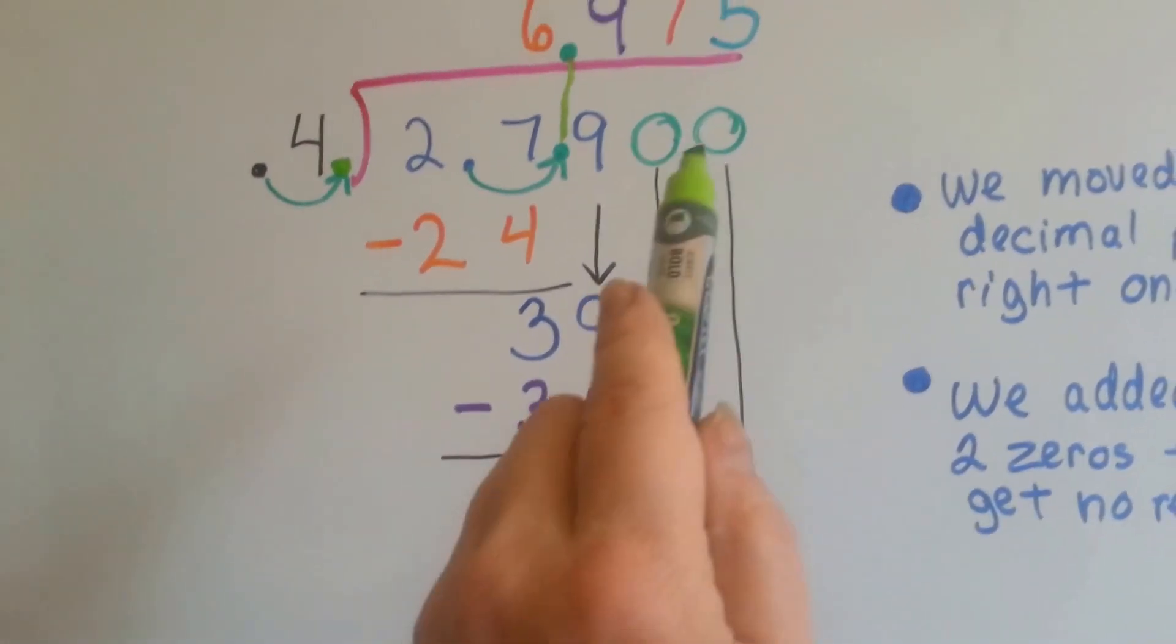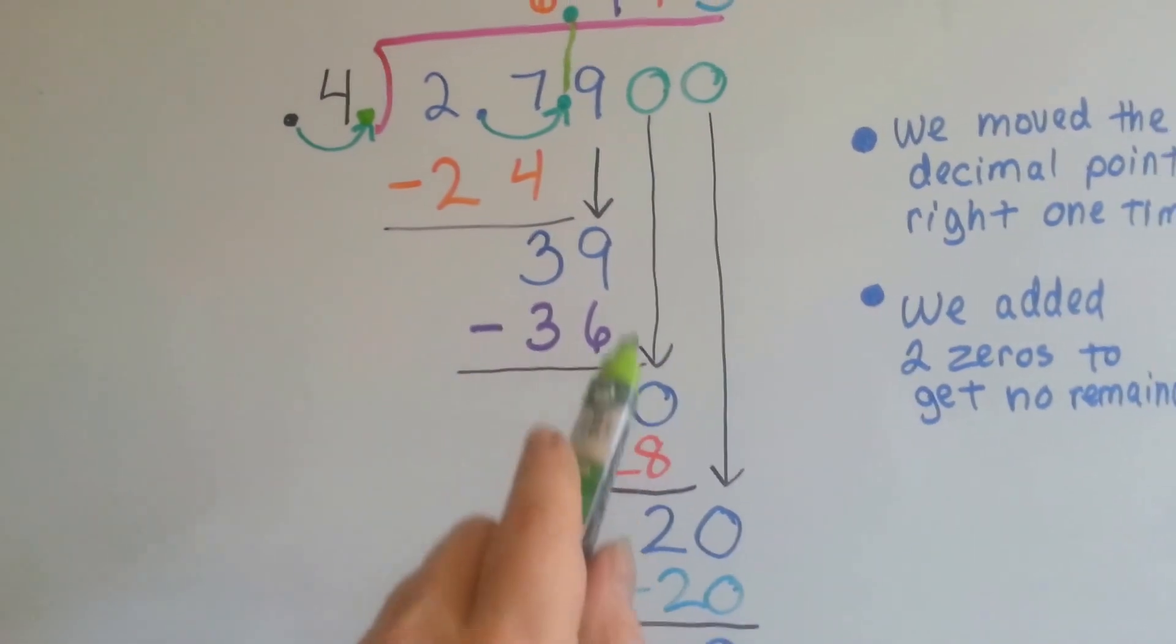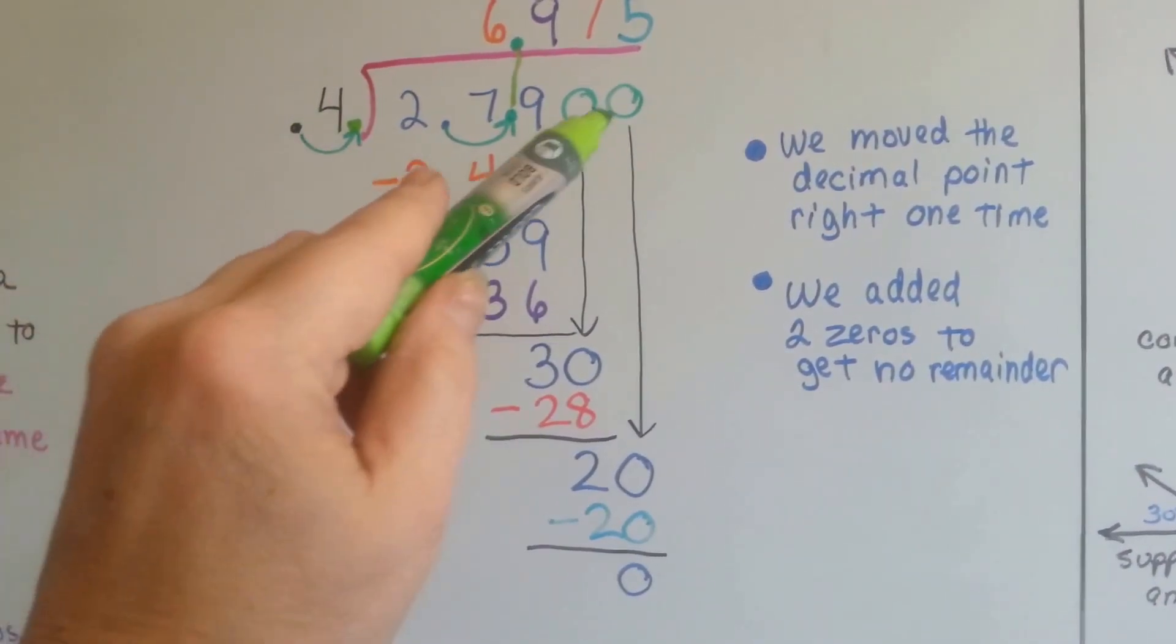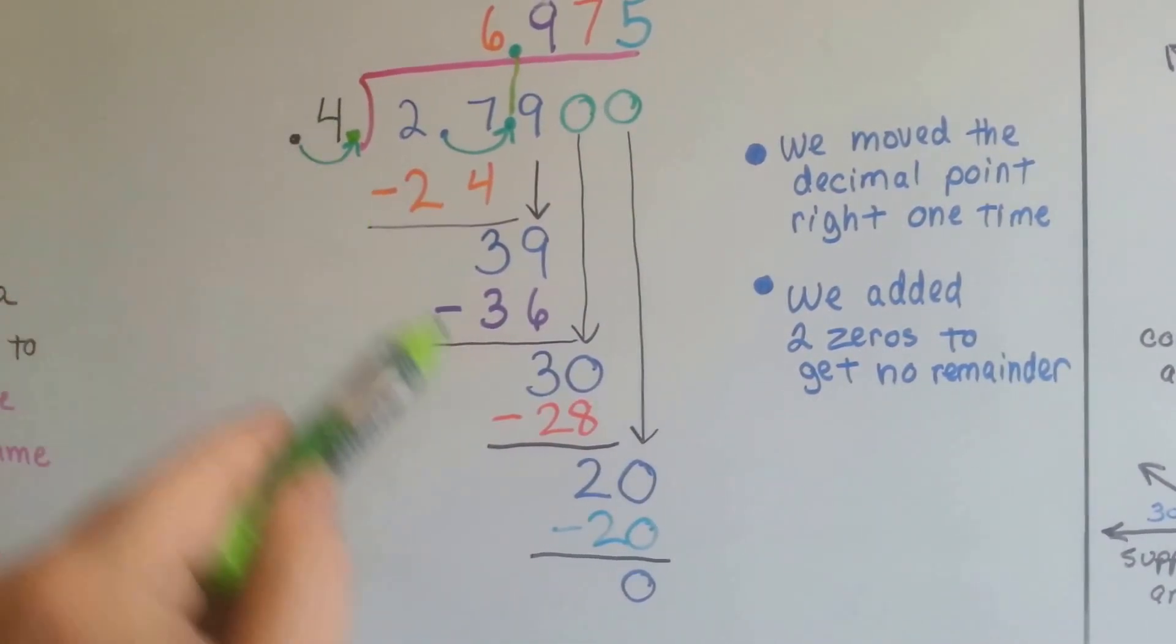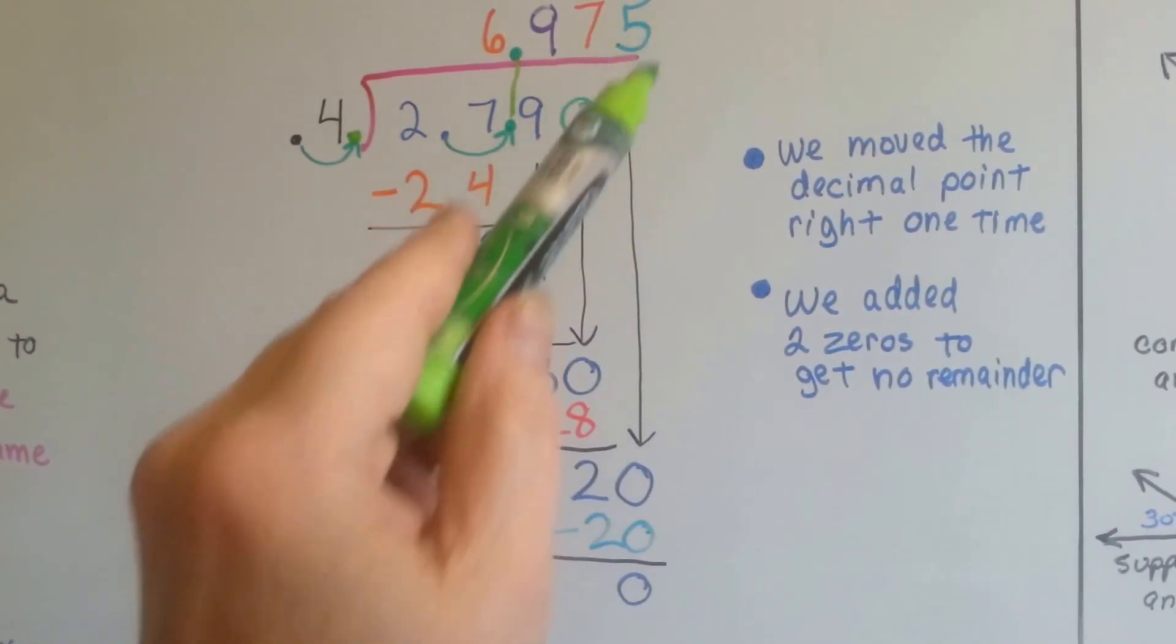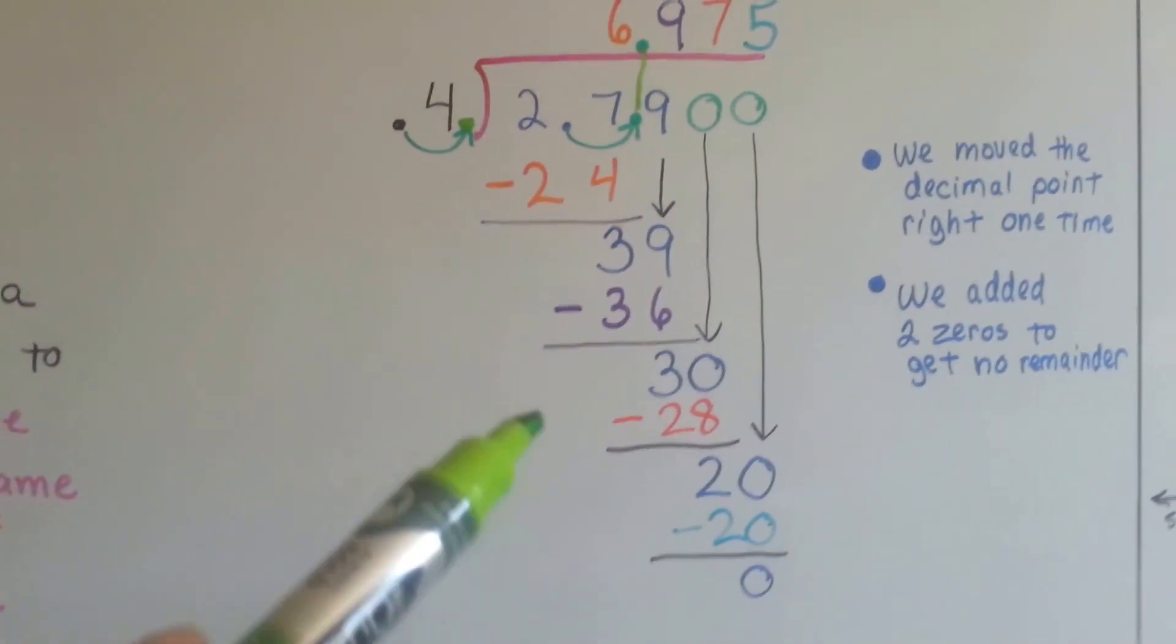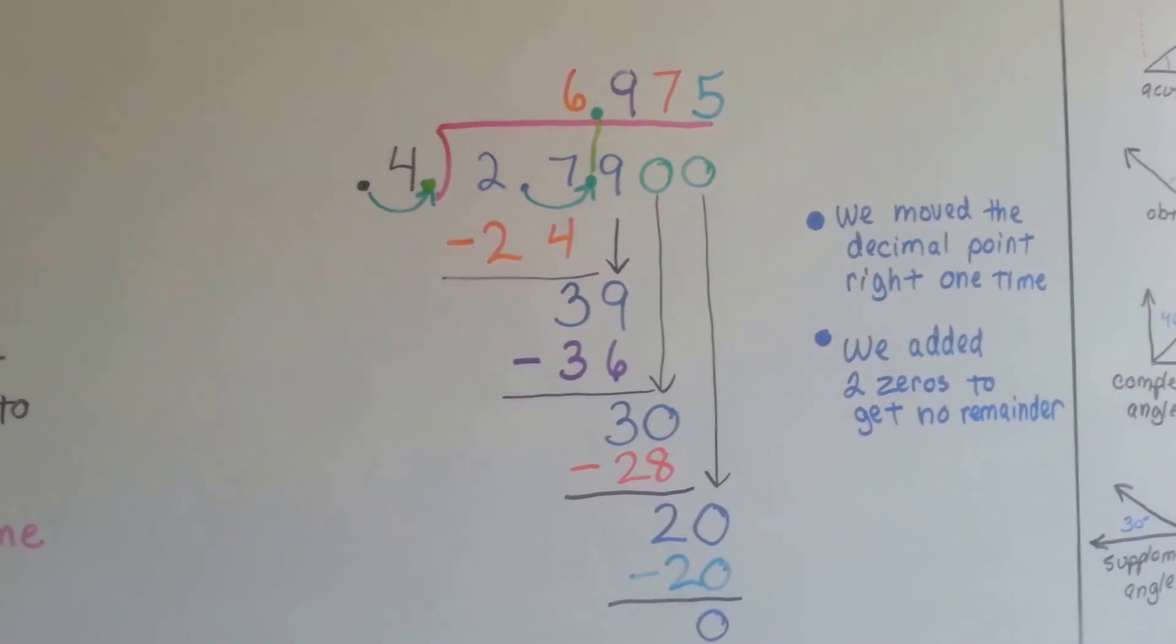Now we're going to add another 0, because we're going to try to get this to be an even amount so that there's no remainder. So, we add our second 0, we drop it down, and look, it's perfect. 4 goes into 20 how many times? 5, and it goes in evenly. We end up with a 0 remainder, and our answer is 6 and 975 one-thousandths.